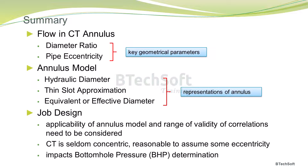To summarize this tech bit on flow in the coil tubing annulus: annular flow is governed by two key geometrical parameters — the diameter ratio and pipe eccentricity. Flow modeling in the coil tubing annulus can be performed using the hydraulic diameter, slot approximation, or equivalent/effective diameter, which are all different representations of the annulus geometry. From a job design perspective, the applicability of the annulus model and the range of validity of the correlations need to be considered. Coil tubing is seldom concentric, so it is reasonable to assume some eccentricity or even an eccentricity profile to accurately estimate the annulus friction pressure losses, as it impacts the bottom hole pressure determination necessary for job success.